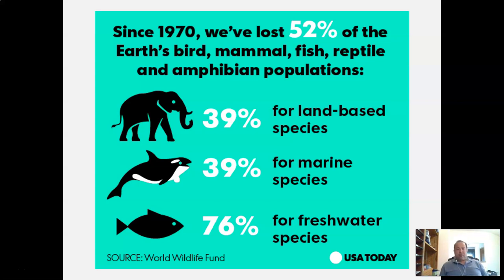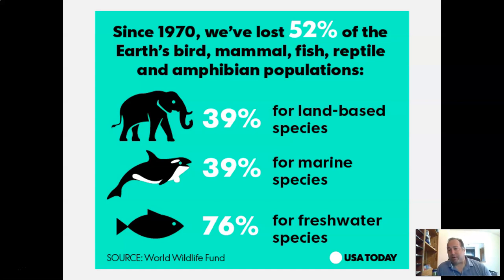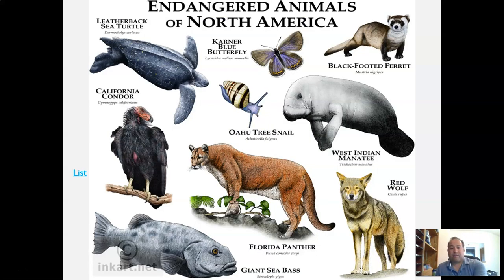Since 1930, we've lost 52% of the Earth's bird, mammal, fish, reptile, and amphibian populations. It's one thing to say way back when they didn't understand what was going on and how to fix the problem — but we're still running into these problems because we still haven't figured out the best way to deal with our natural resources. I think we're really on the right track now, but it's taken a while and it's been a long period of exploitation.